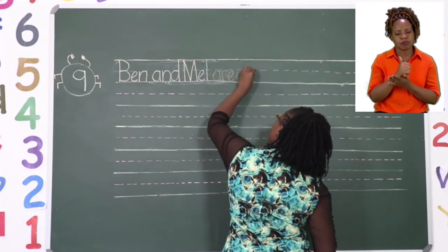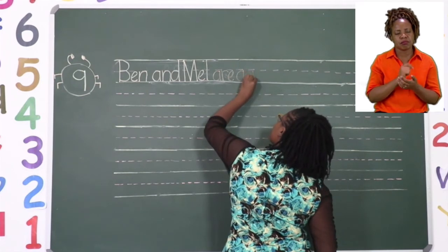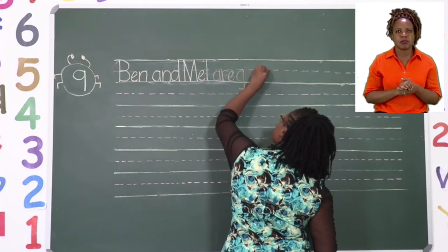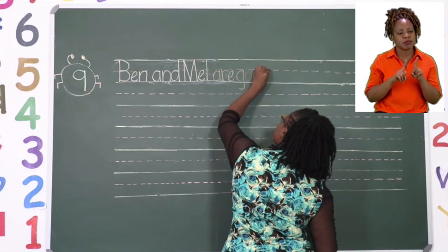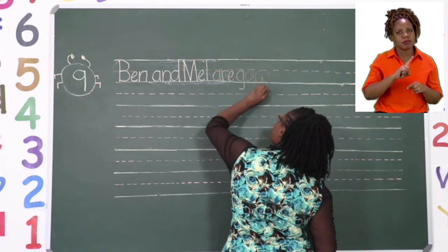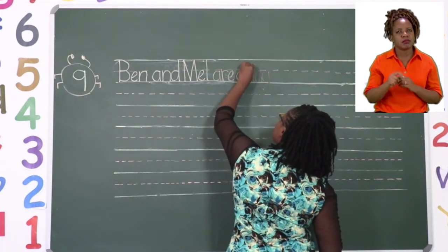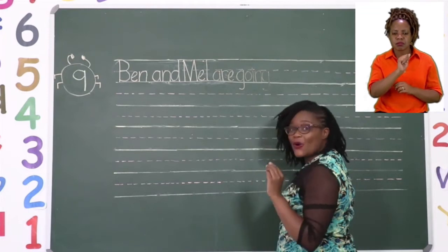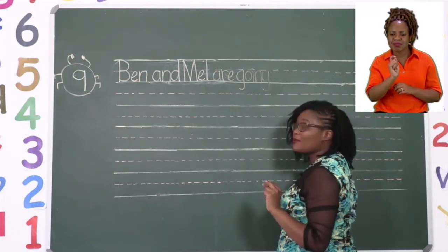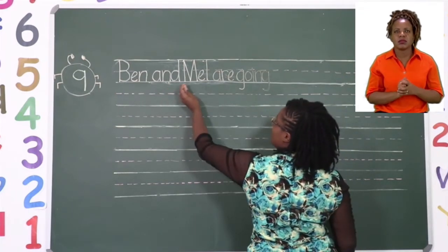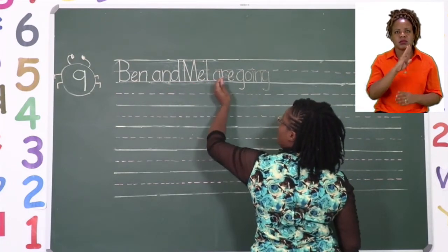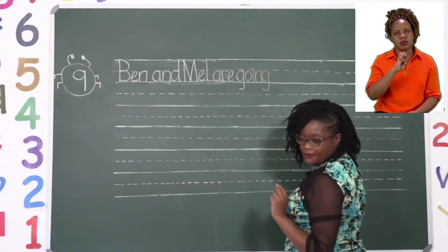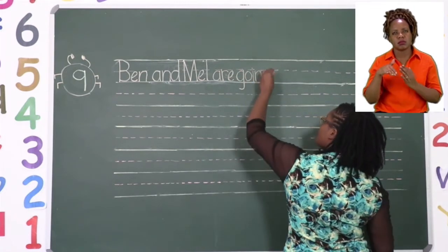Now we need to decide where this sentence ends. If we read 'Ben and Mel are going on a field trip,' that sounds like a complete sentence. So we are going to complete the sentence up until the word 'trip,' where we will put a full stop. We are now going to write 'are going on a field trip.' Remember boys and girls, when you are writing your letters, shape them correctly. If your letters are not shaped correctly, your handwriting will not be neat. Make sure that each letter touching the dotted line actually touches it, and any letters going to the top line must touch the top line.